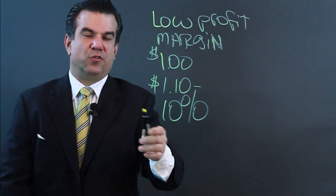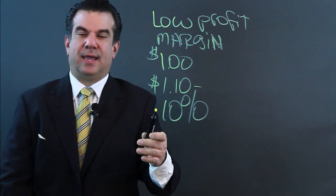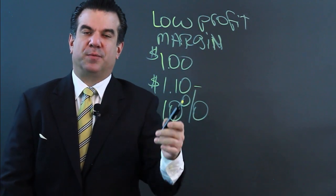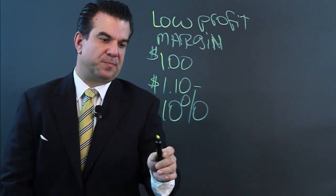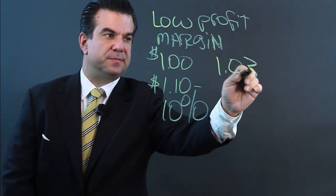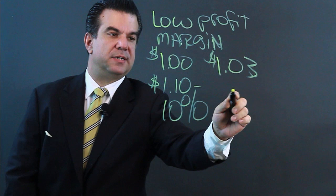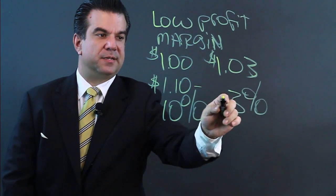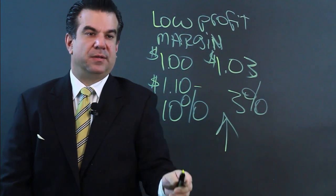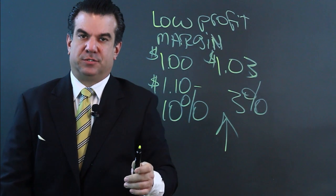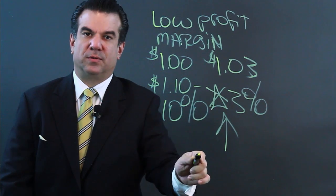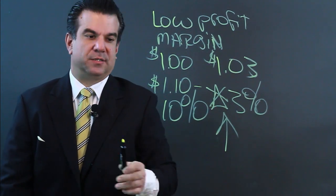Now, if you've purchased all these pens and an influx of a competitor's product comes in, and the marketplace is flooded with these particular pens, and you can only charge $1.03 — your profit margin has gone down to 3%. And your expenses thereafter could very well exceed the money that you bring in to sell these pens. So you don't have a lot of room to move when you have a low profit margin product and a low profit margin business.